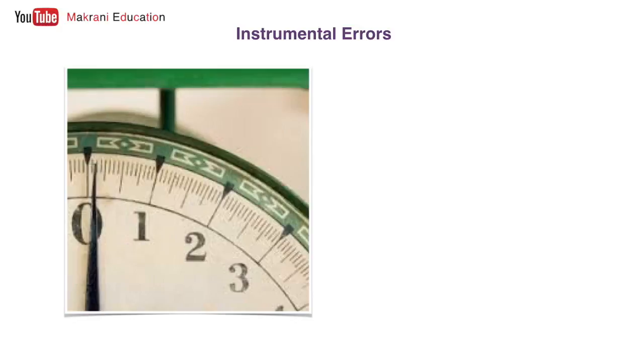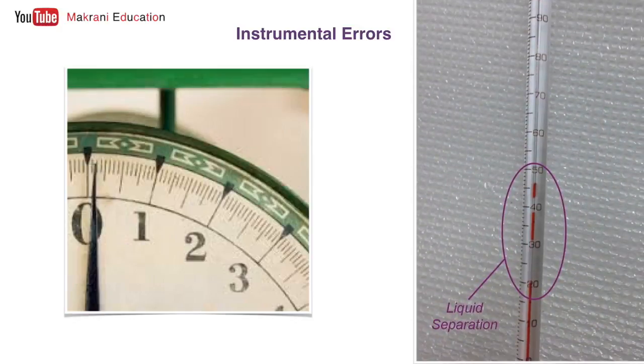This deflection will be carried forward in each and every measurement we take with this weight scale. So here is an example of positive direction error. There are always plus some grams in whatever accurate weight you measure. With this thermometer you can see liquid separations.